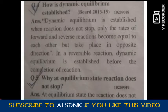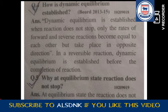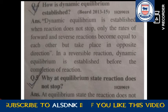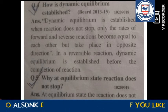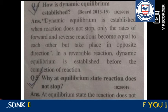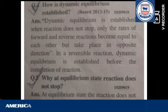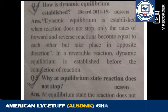The next question is: how is dynamic equilibrium established? Dynamic equilibrium is established when the reaction does not stop, but the rate of forward and reverse reactions become equal to each other, taking place in opposite directions.